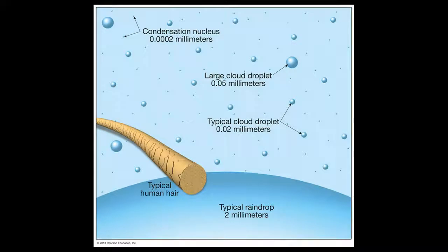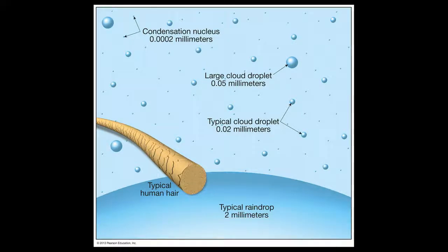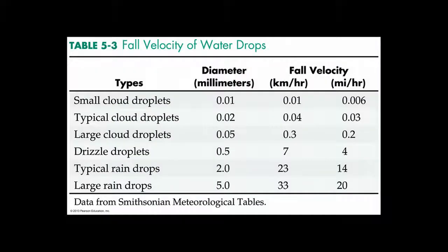Well, of course, it depends on the size of the water droplet. We typically measure water droplets in terms of their diameter, which is to say the distance from one side of the droplet to the other. Fortunately, we have a table giving us the velocities — the speed, essentially — that a droplet falls depending upon its diameter.